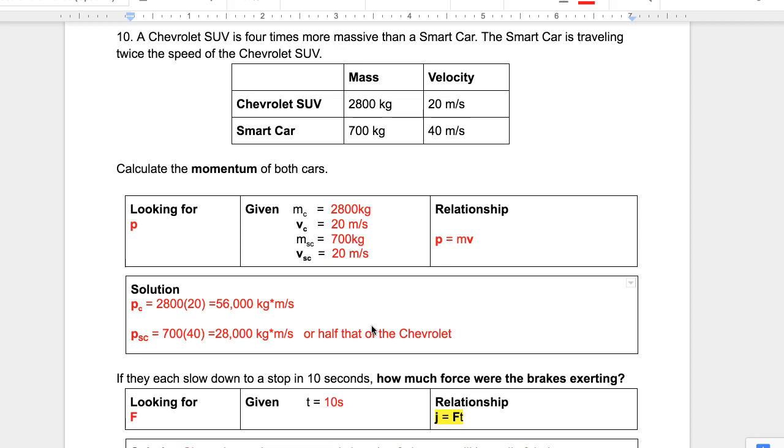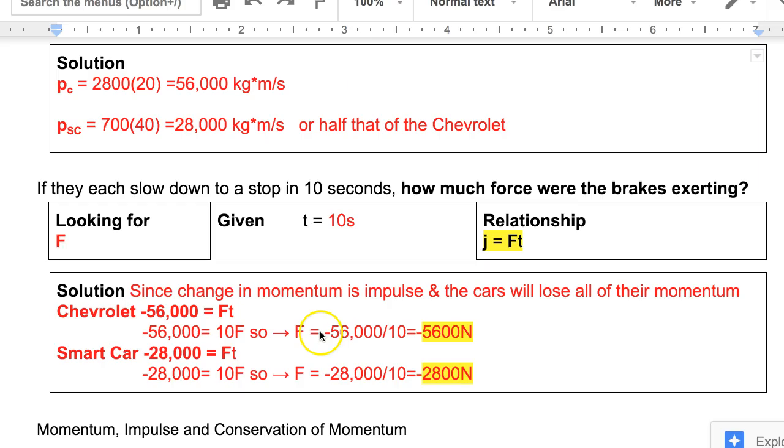Okay, now we're looking at impulse. Remember that impulse is the change in momentum. Here they both slow down to a stop in 10 seconds. That means a stop would be zero momentum, so they're going to lose all of their momentum. The change in momentum is impulse. That equals force times time. That means we have the change in momentum or impulse, and we have the time, so we can plug in to solve what we're missing, the force.